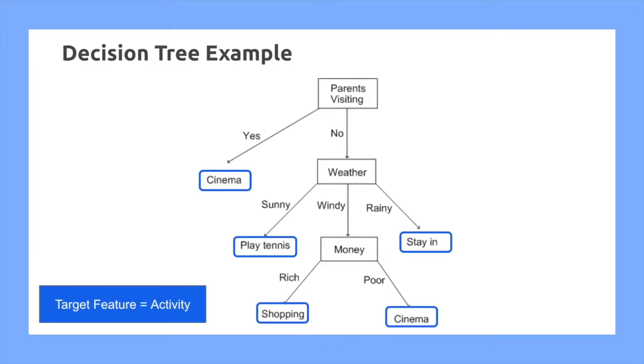For example, going to the cinema, playing tennis, shopping, or staying in. So using this, I can identify based on a series of different features what my activity would be, and that is the discrete target feature. The target feature needs to be discrete in the case of a decision tree.